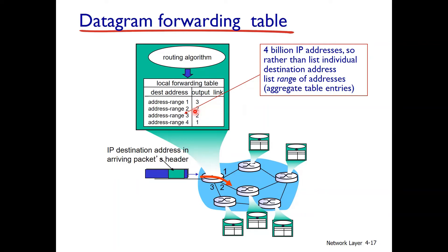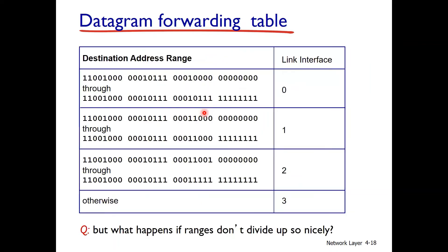So instead of mapping all IP addresses individually, we map destination address ranges. For example, if the address range is 1 to 100, the outgoing interface is 0. If the range is 2 to 1 to 300, a different interface is used. This is the concept of range-based forwarding.